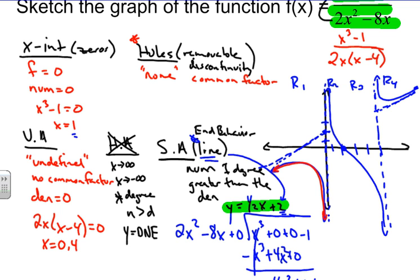And that's our sketch of the rational function. To summarize: we found our holes — none; found x-intercepts by setting the numerator equal to zero; found vertical asymptotes; checked for horizontal asymptotes — none; then found the slanted asymptote using long division. We graphed everything, tested our different regions, and that gives us our sketch of the rational function. Good luck with the rest of your problems!